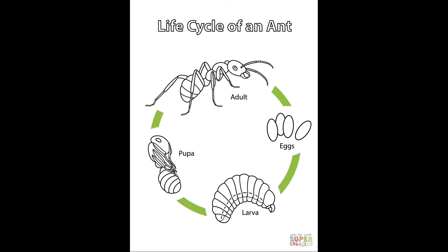Ants undergo a complete metamorphosis. Most of the eggs eventually develop into small female worker ants that begin their lifetime of hard work by gathering food for the queen, making sure she is well fed. The queen will never leave the nest again, living there for 10 to 20 years, perhaps even longer. As the mother of the colony, she has her own special chamber. Her only job from this point on is to lay eggs.